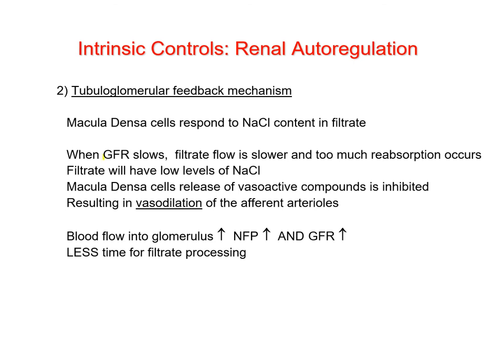If GFR is slower than normal, filtrate formation is reduced and the fluid spends too much time in the tubule — reabsorption is too high. Too much water and sodium chloride gets reabsorbed, resulting in a lower than normal osmolarity in the distal convoluted tubule. In this case the release of vasoactive compounds is inhibited, resulting in vasodilation of the afferent arteriole and increased blood flow into the glomerulus. Hydrostatic pressure and net filtration pressure rise, so GFR rises.